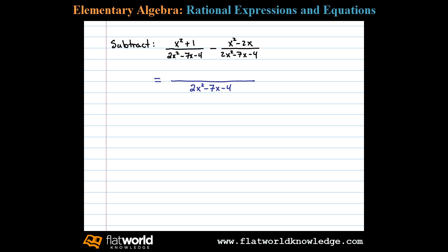In this case we have x squared plus 1 minus the quantity x squared minus 2x. Now I take care to write that in parentheses because we're going to have to distribute that negative 1.